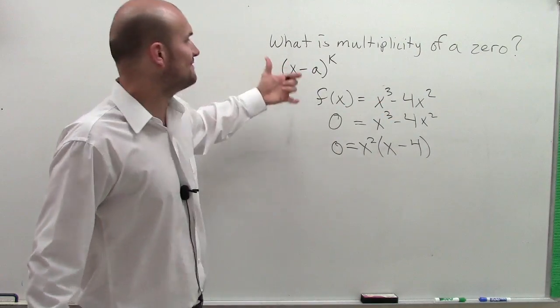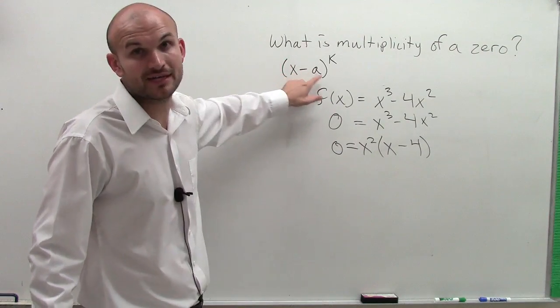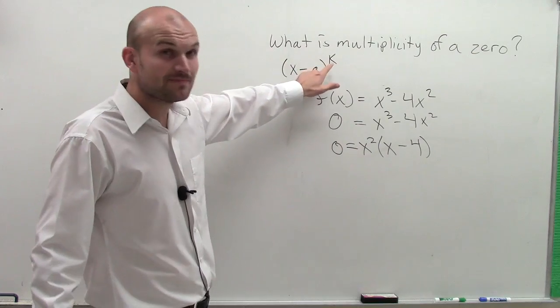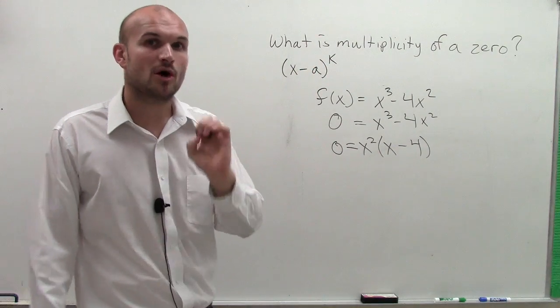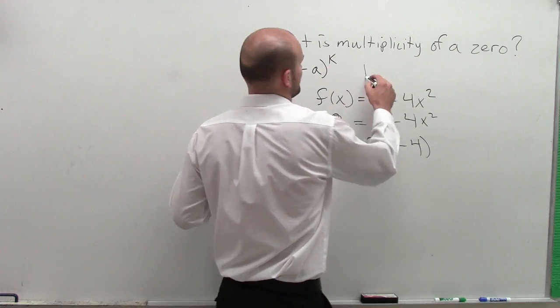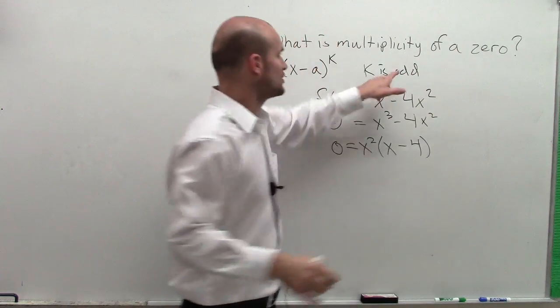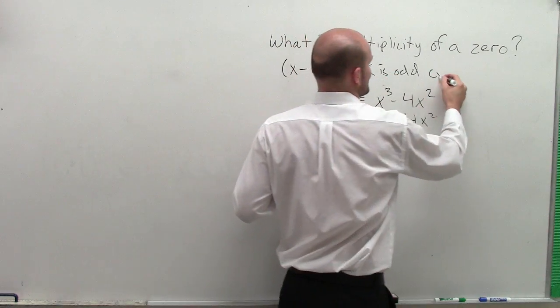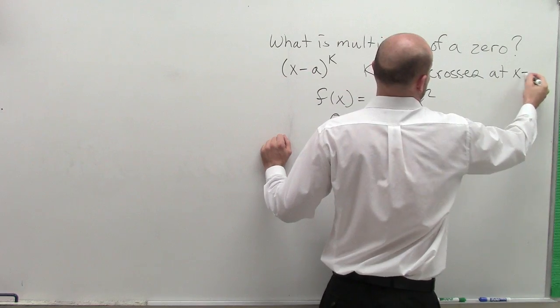By using the definition of multiplicity, when you have a factor in the form (x - a)^k, the exponent k is your multiplicity. If k is odd, then your graph crosses at x = a.